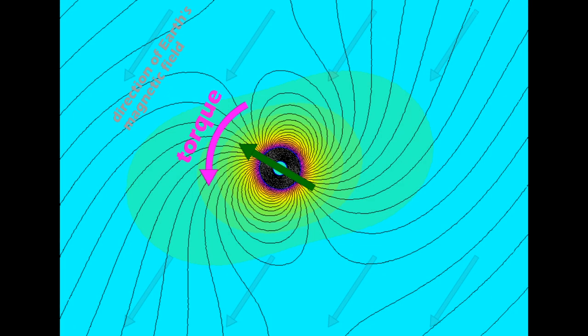The magnetic moment of a permanent magnet is a way of describing how much torque the magnet feels when it's placed in a magnetic field.